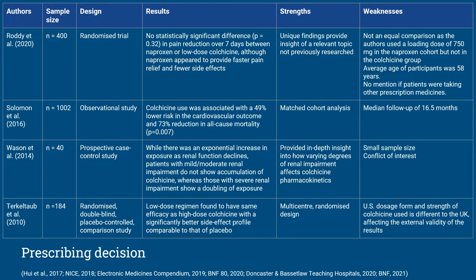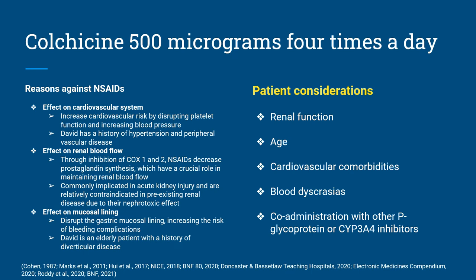Terkeltaub and colleagues in 2010 compared low-dose and high-dose colchicine, and found that a low-dose regime maintained the same efficacy as high-dose colchicine but with a significantly better side-effect profile comparable to that of placebo. In weighing up the benefits and risks, consideration was given to patient-specific factors and David's response to previous treatment. After appraising the evidence and considering the patient's GFR, colchicine use in mild-to-moderate kidney disease was considered safe. David was not on any inhibitor of P-glycoprotein or cytochrome P450. His previous response to naproxen did not have long-lasting benefits, and after consulting the local formulary and guidelines, an NSAID even with a PPI was not deemed the safest choice. Overall, colchicine was deemed to have the best safety profile for David.